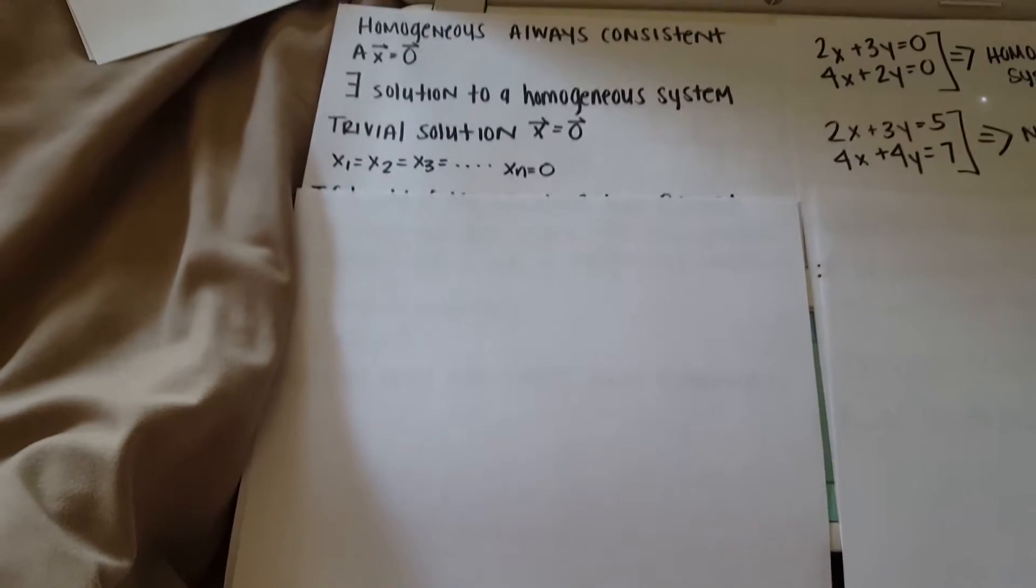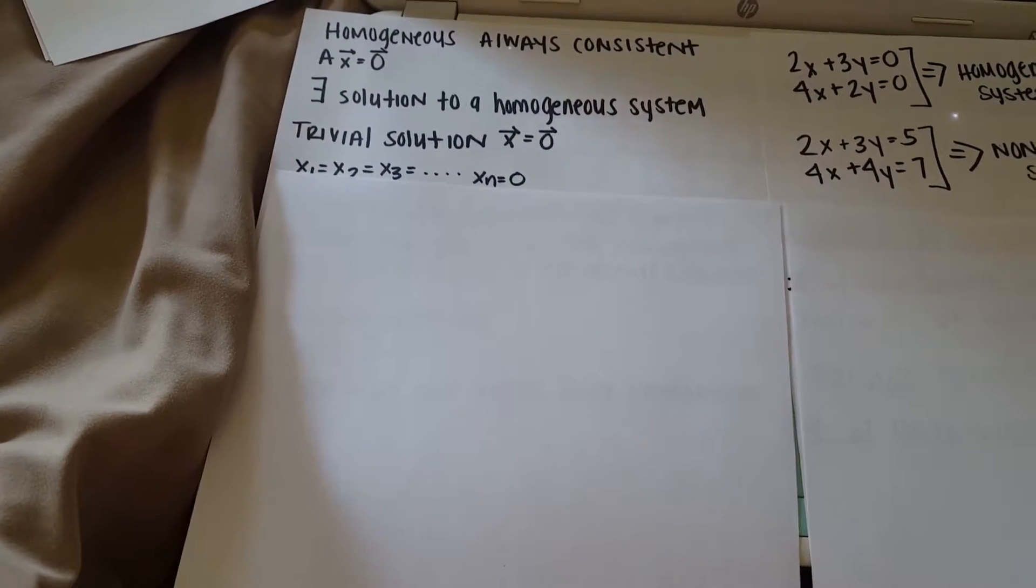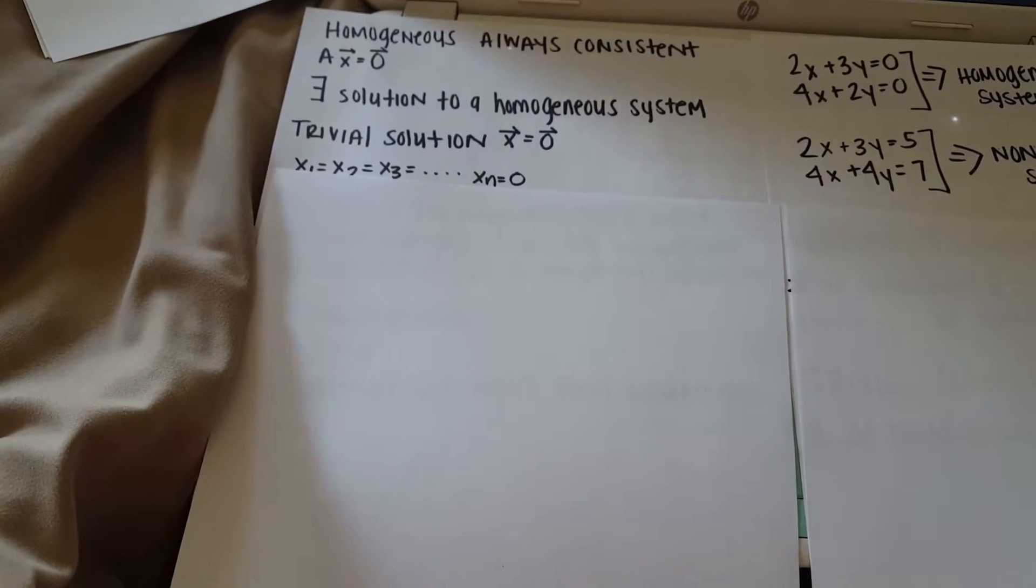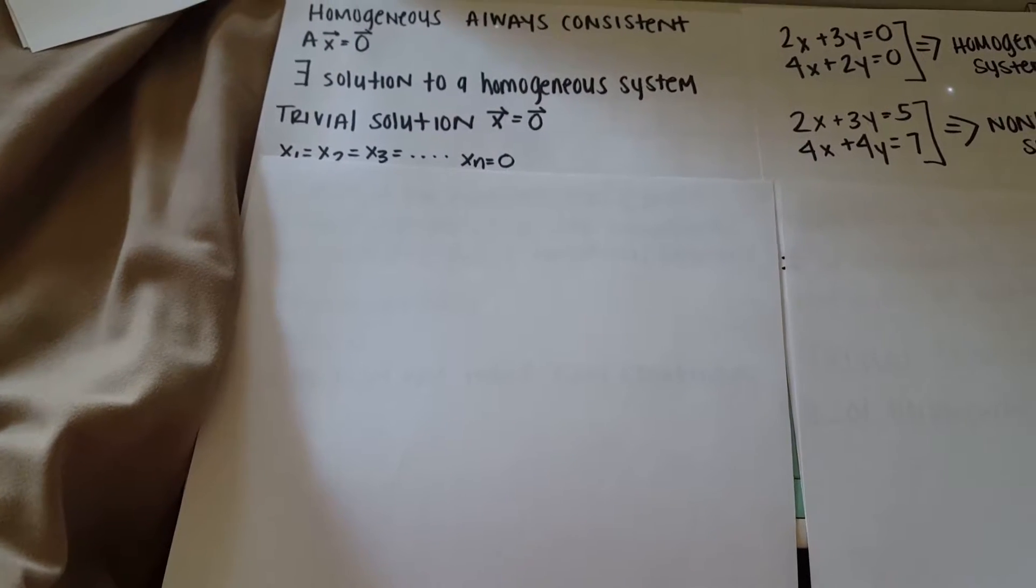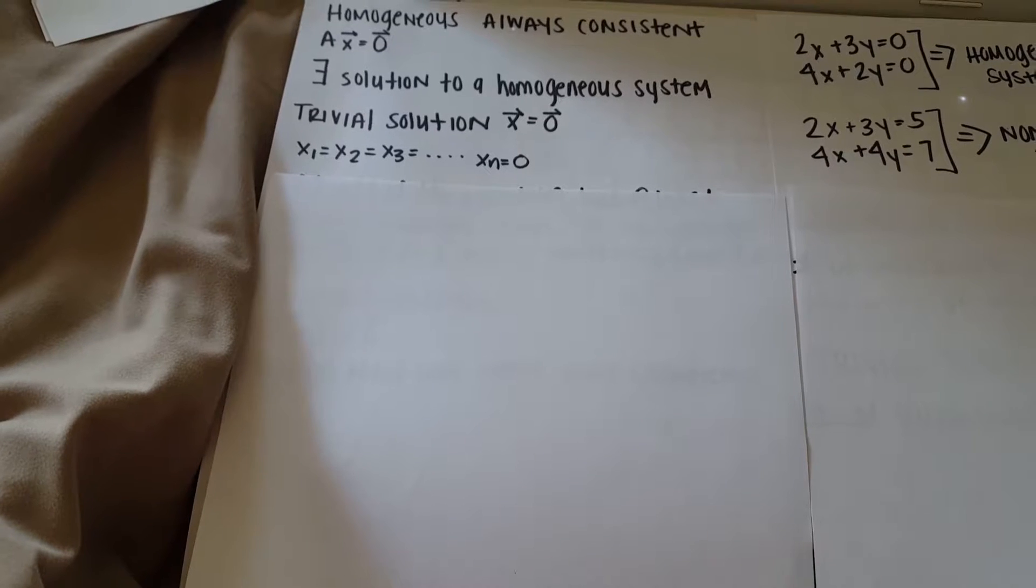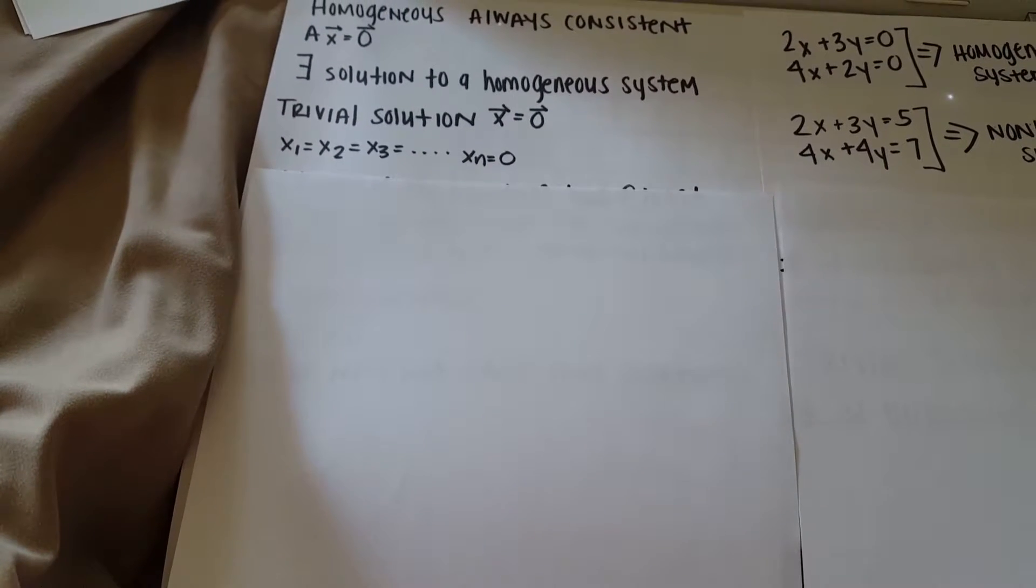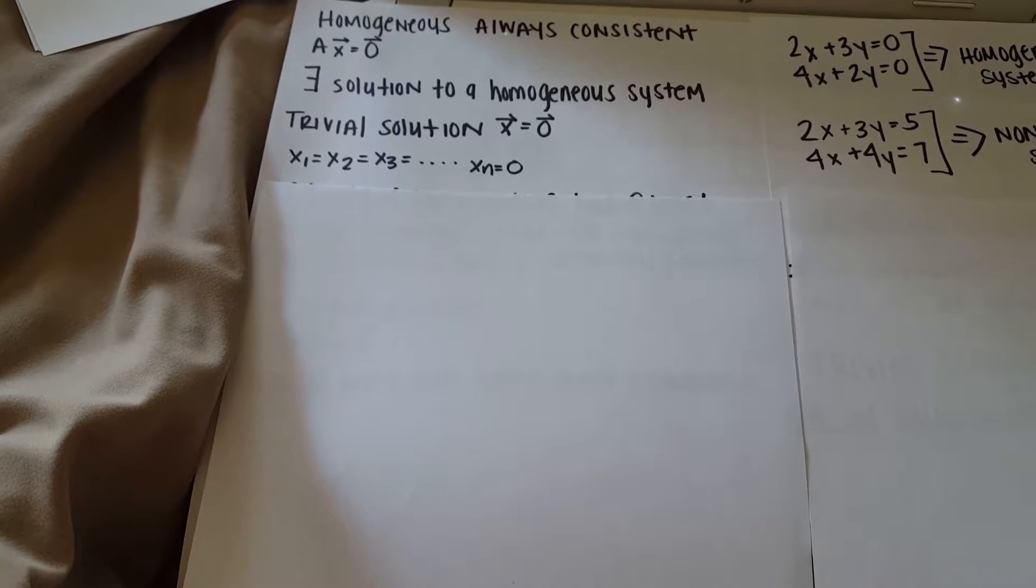When we're dealing with homogeneous systems, it can either have a trivial solution or a non-trivial solution. A trivial solution says that the vector X is equal to the vector zero, which means X1, X2, X3, X4, and so forth all the way to Xn, all those Xs are equal to zero.